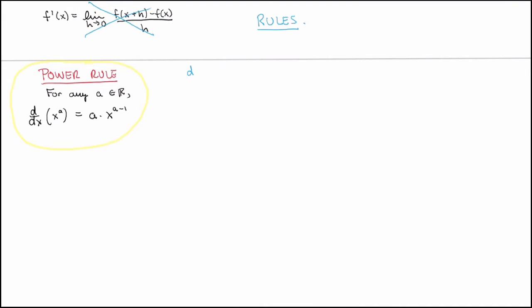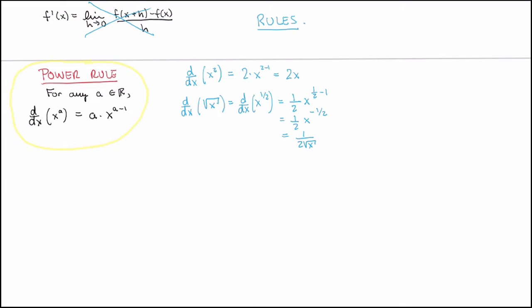Let's work out a few examples. The derivative of x squared, by the power rule, is 2 times x to the 2 minus 1, which is just 2x — indeed what we calculated from the definition, but see how much faster this is. You can also calculate the derivative of the square root function: that's the derivative of x to the power of 1/2, which by the power rule is 1/2 times x to the power of 1/2 minus 1, or 1/2 times x to the power of minus 1/2, which equals 1 over 2 square root of x — again matching what we got from the definition, but much faster.